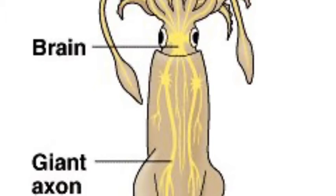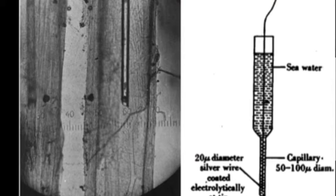Scientists in the 1930s decided to take advantage of the giant squid axon to study the electrophysiology of a nerve cell. The giant squid axon is large enough to insert an electrode directly into it, allowing researchers to observe the electrical activity of the cell.